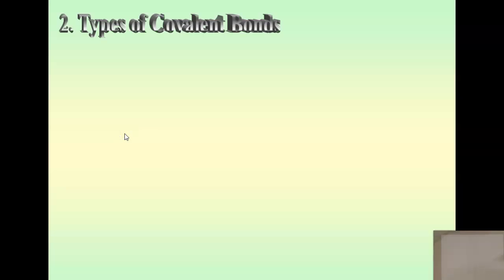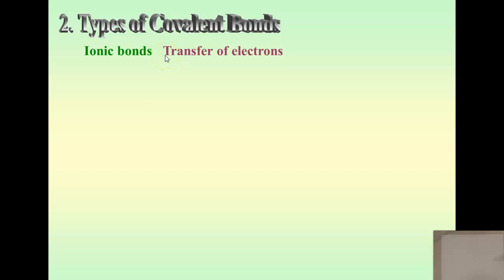Today we're going to be talking about different types of covalent bonds. As a quick review, an ionic bond is when there is a transfer of electrons. One loses, one gains, one becomes positive, one becomes negative, and they stick together.